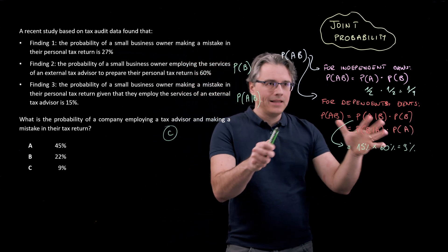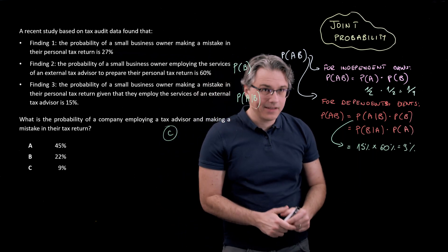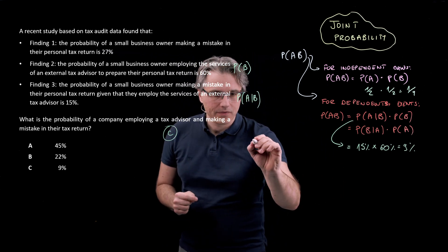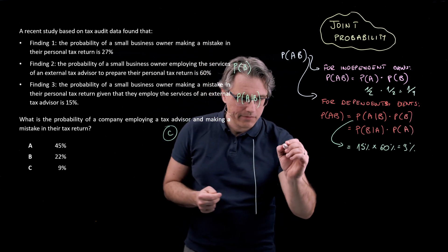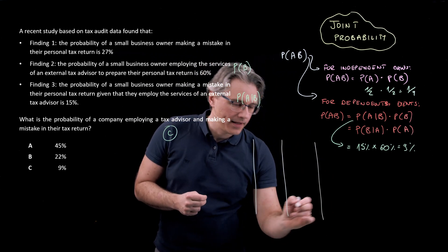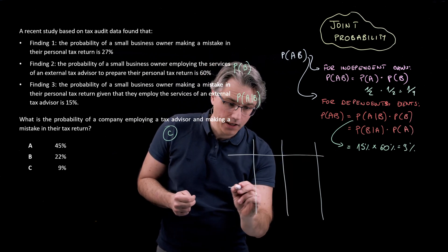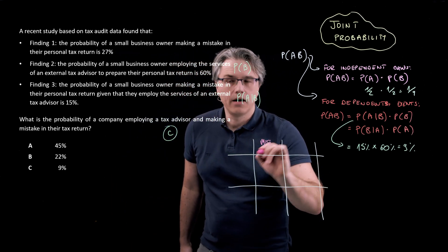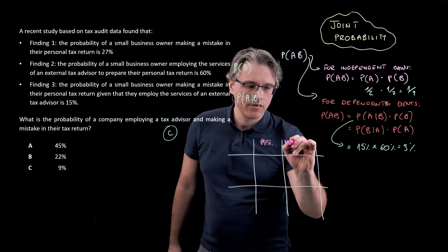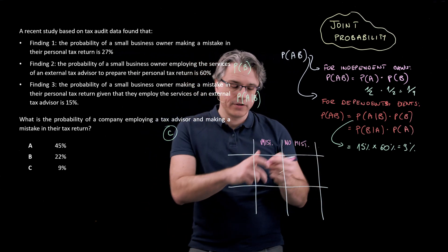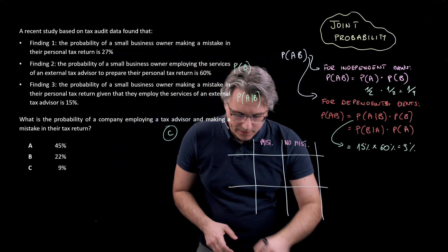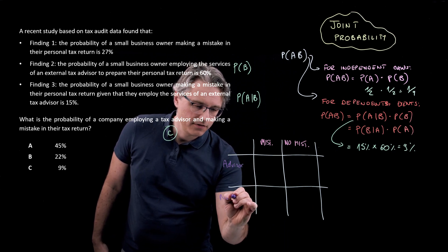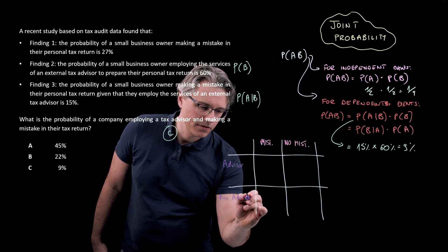Let me draw a table to make this more intuitive. In the columns I'll record 'mistake' and 'no mistake', and in the rows 'advisor' and 'no advisor'. The items in the middle cells of the table will be the joint probabilities, as they fall at the intersection of these two categories.